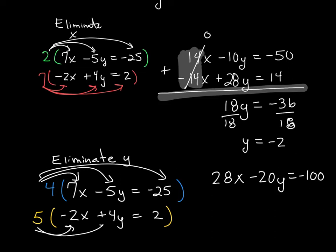And then in the bottom, when I multiply the 5 to all 3 parts, I will have negative 10x plus 20y equals 10. And by design, those y's when I add it together becomes 0.